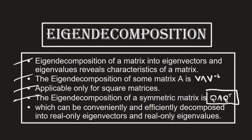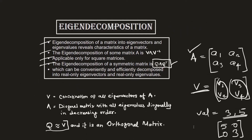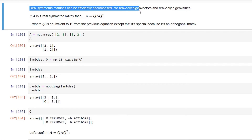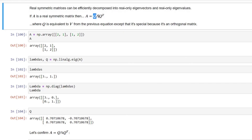The eigendecomposition of a symmetric matrix is represented in a special form. Here Q is equivalent to V — the concatenation of all eigenvectors — but Q is special because it is an orthogonal matrix. When we calculate the eigendecomposition for a symmetric matrix in this form, it can be decomposed into real values within the eigenvectors and eigenvalues.